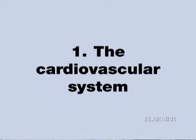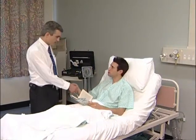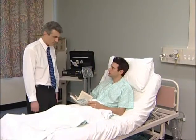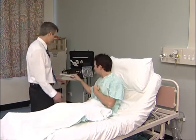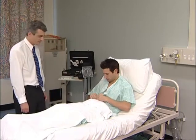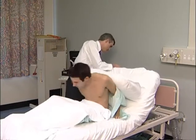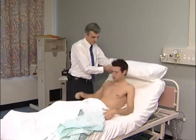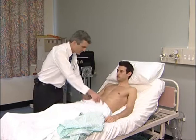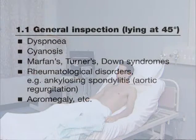The cardiovascular system. Cardiovascular examination begins with the positioning of the patient at 45 degrees, in bed and with the chest exposed. It is vital to stand back and make a general inspection looking for dyspnea, cyanosis, an intravenous line, an ECG monitor and so on.